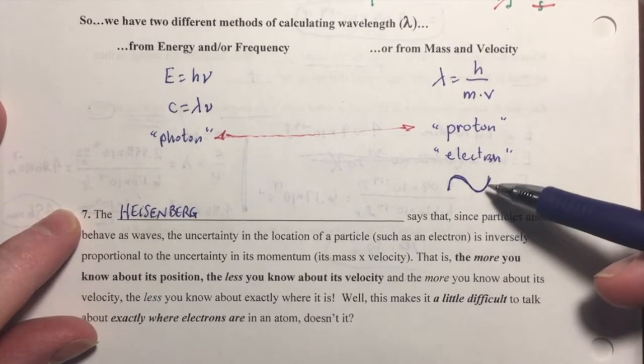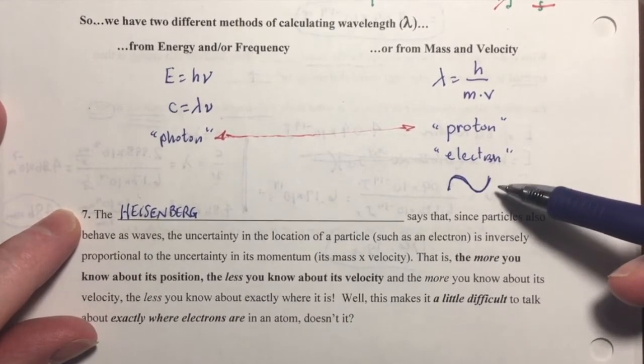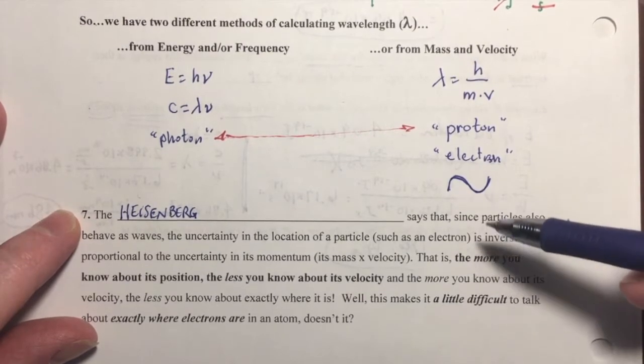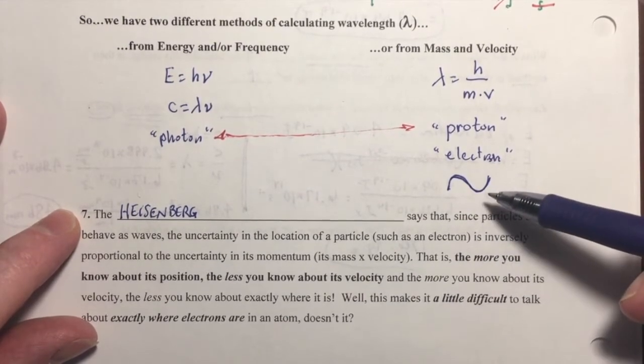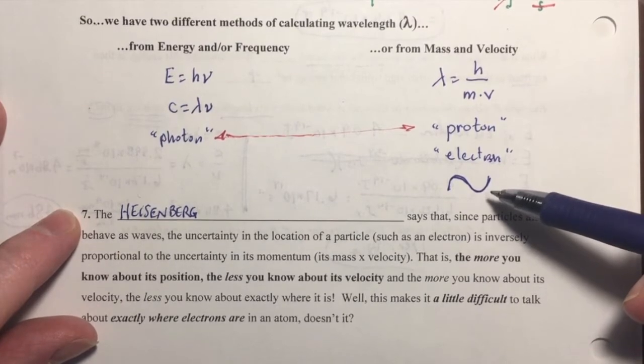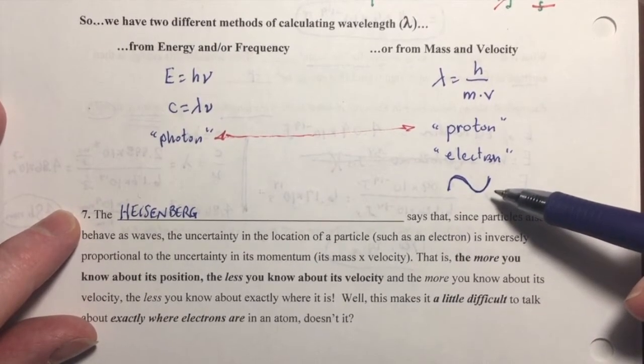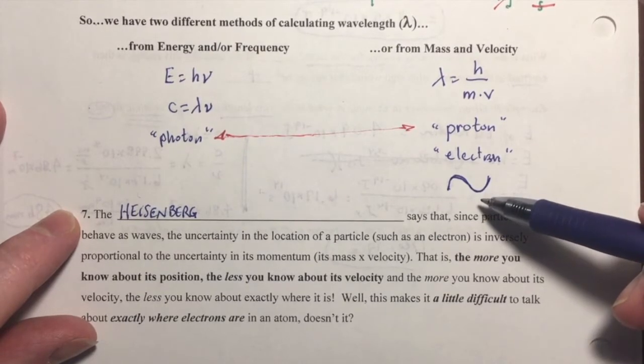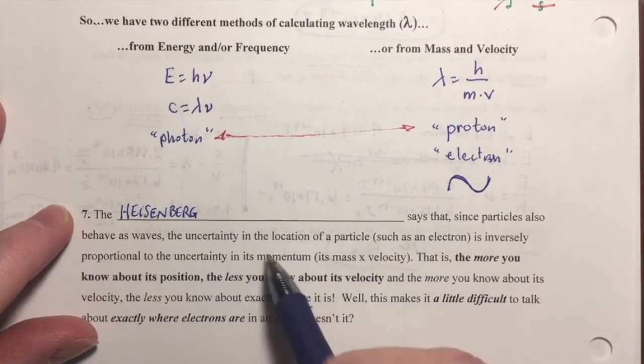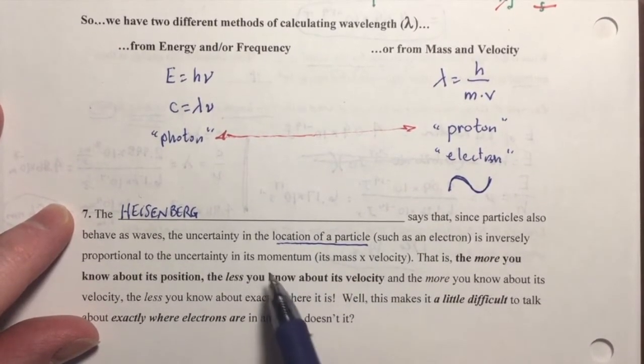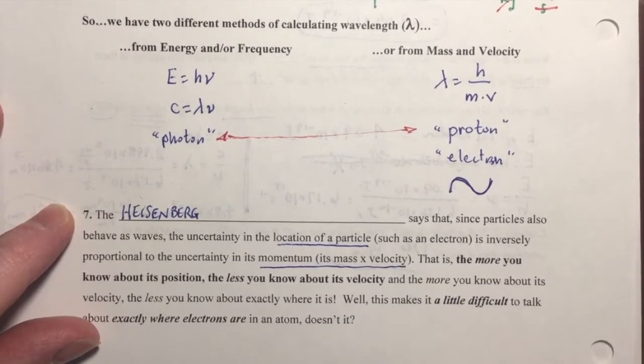So, this researcher, Heisenberg, was studying the quantum mechanical nature of electrons, and he came up with a mathematical equation that showed that the more certainty you have in knowing exactly where the electron is in a particular moment, the less certainty that you have in knowing its momentum, that is, its mass and velocity.